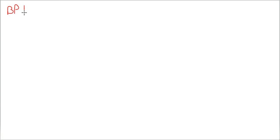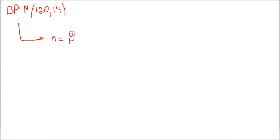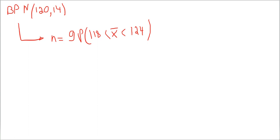Let's do some calculations. If you were told that blood pressure has a normal distribution with mu equals 120 and sigma equals 14, and you're asked: if you take a sample of size 9, what is the probability that X̄ of these 9 individuals falls between 118 and 124?